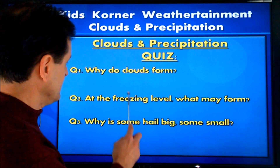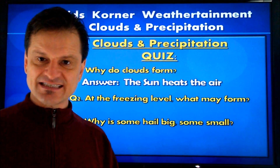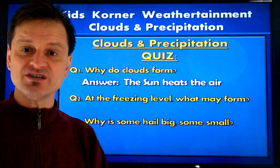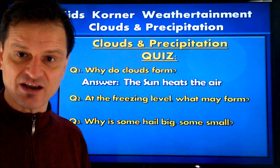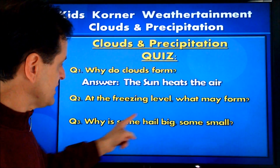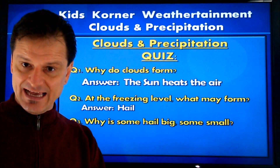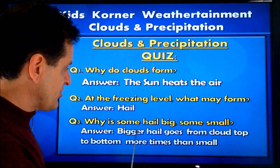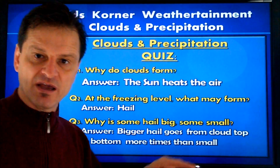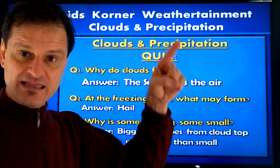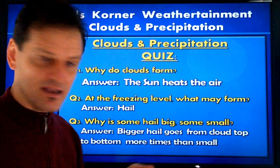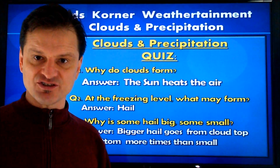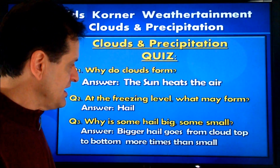Quiz answers. Number one: why do clouds form? The sun heats the earth — half the earth at any given time — causing warmth to gather evaporation and cause condensation as the warm air rises, and that creates the cloud cover. Number two: if the cloud reaches the freezing level, what may form? Hail. Which leads to our third question: why is some hail big and some hail small? The bigger hail is able to go from the cloud bottom to the cloud top more times, gathering a layer of water and freezing it at the top. Smaller hail doesn't have strong enough winds to carry it to the top enough times to create larger hailstones.